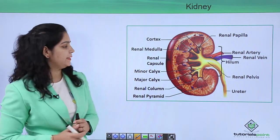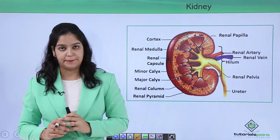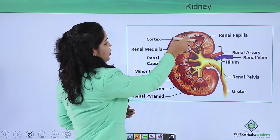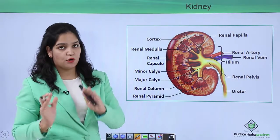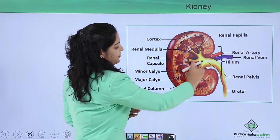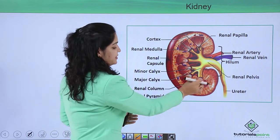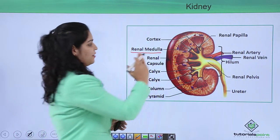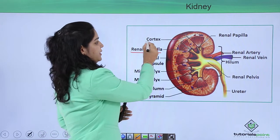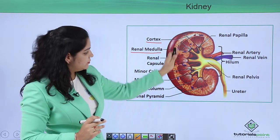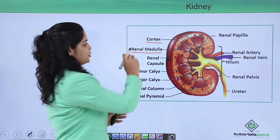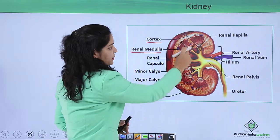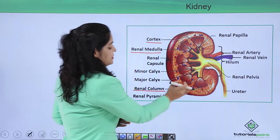Now let's talk about the internal structure of the kidney. Two main portions are present: the cortex and the medulla. The layer just after the renal capsule is called the cortex. Inside the cortex, pyramidal-shaped structures are visible. These are called the renal medulla. Between the renal medulla, a renal column is present between the pyramids.